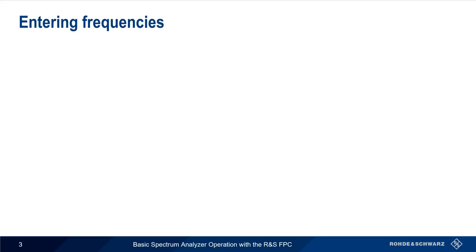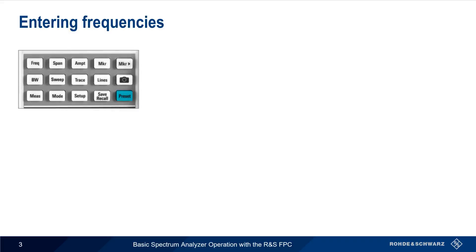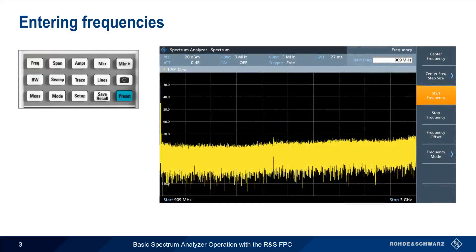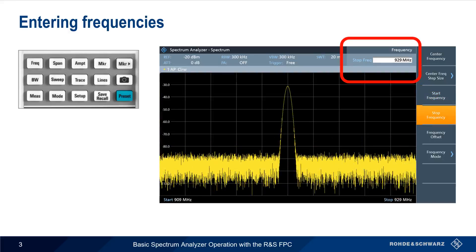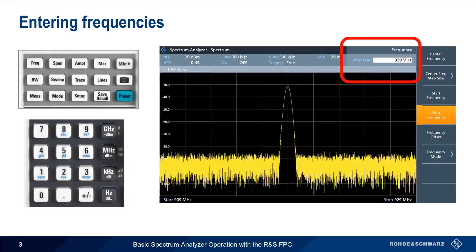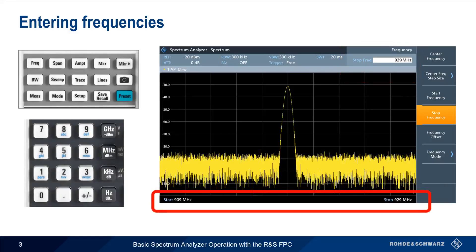The first configuration task when using any spectrum analyzer is entering the stop and start frequencies. On the FPC, we access the frequency settings using the frequency hard key. If we're interested in the range of 909 to 929 MHz, we use start frequency to enter our start value and stop frequency to enter our stop value using the keypad and unit keys. The start and stop frequencies are shown at the bottom of the display.